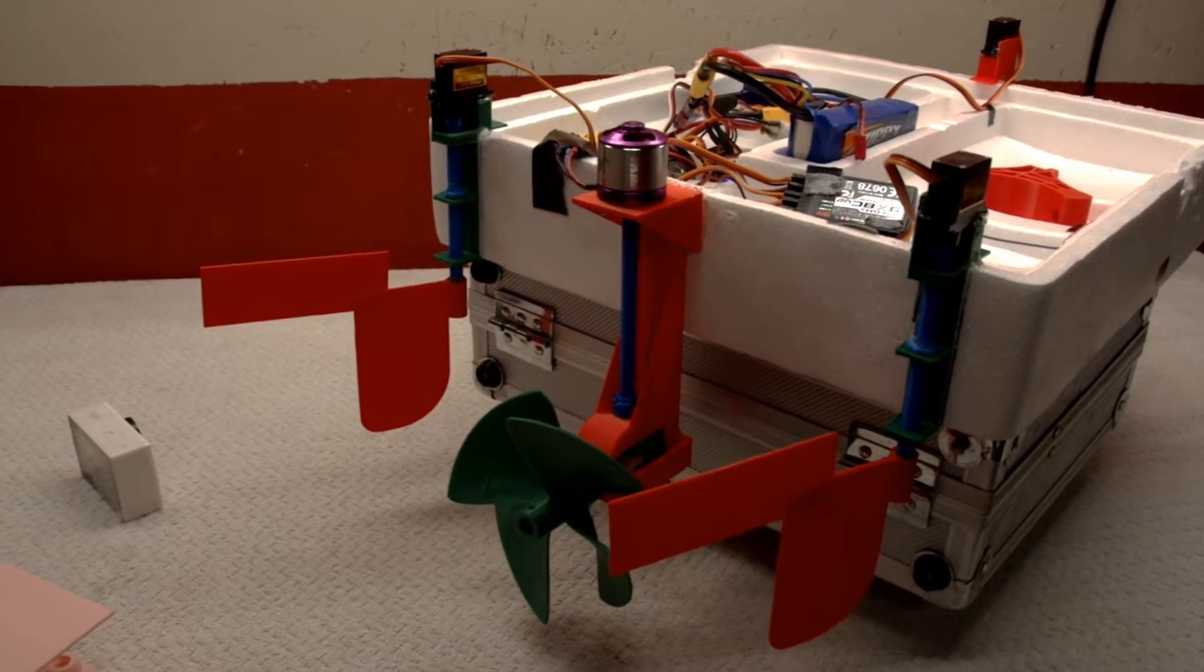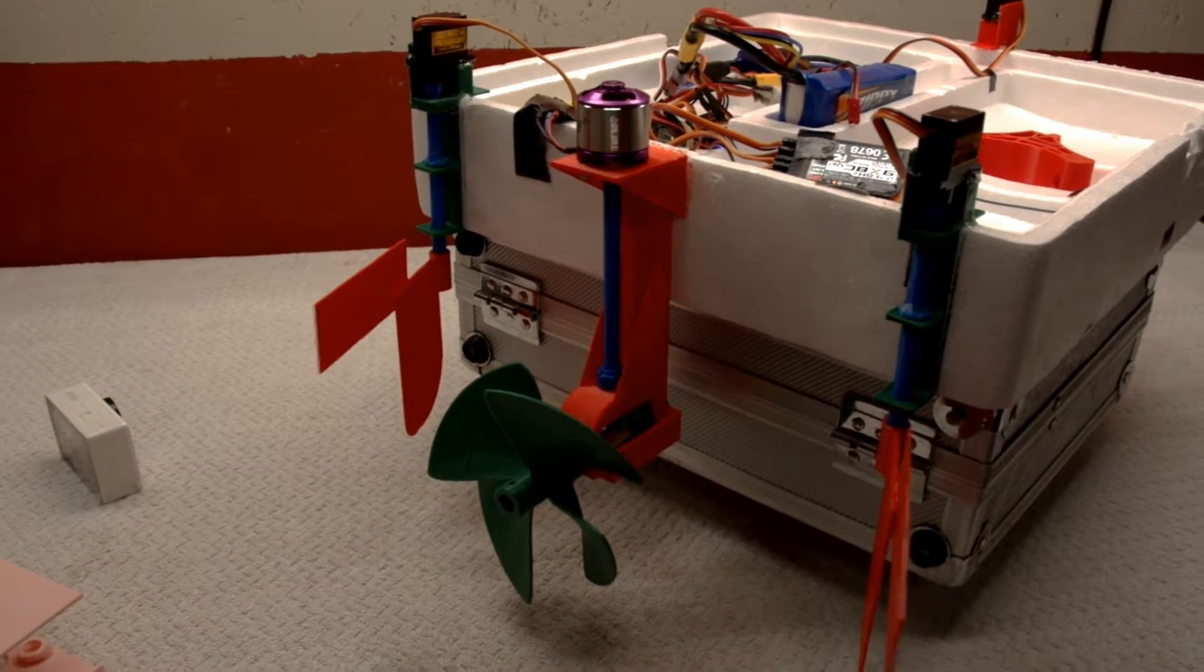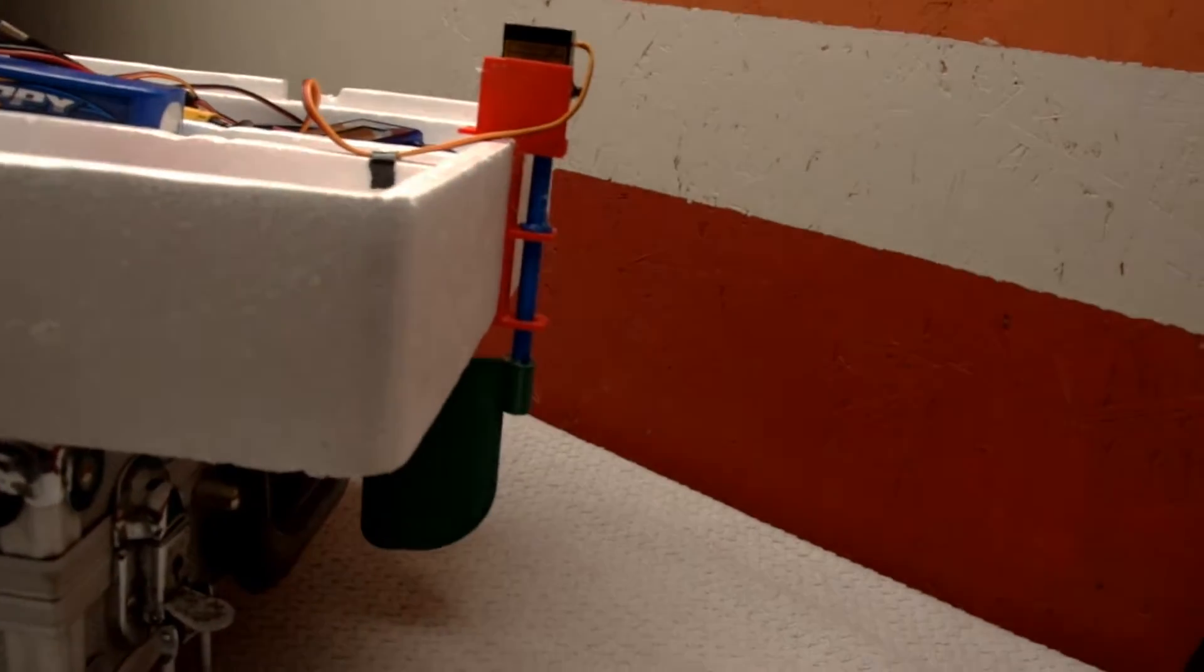Testing the operation of these servo-actuated rudders exposes some jittery holding characteristics. This is because of the long, flexible moment arm that is the rudder attached to the servo itself. Once in the water and with the load on the rudder, this jittery movement should go away.